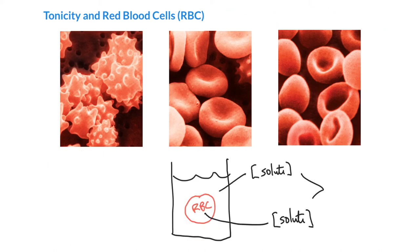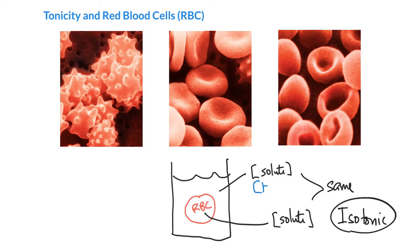The last situation is if the solute concentration in and out is exactly the same — that is called isotonic. If it's isotonic, the water concentration has got to be the same inside as outside of the cell. So water will go in and water will also go out, but on average it won't change the size. There's no net rush of water going in, and so the red blood cells just look like nice, plump, ordinary-looking red blood cells.